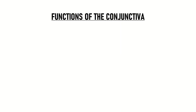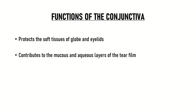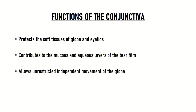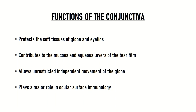In summary, the important functions of the conjunctiva are: first, it protects the soft tissues of the globe and eyelids; second, it contributes to the mucus and aqueous layers of the tear film through its mucin-secreting glands and accessory lacrimal glands; third, it allows unrestricted independent movement of the globe; and fourth, it plays a major role in ocular surface immunology as it contains lymphoid tissue.